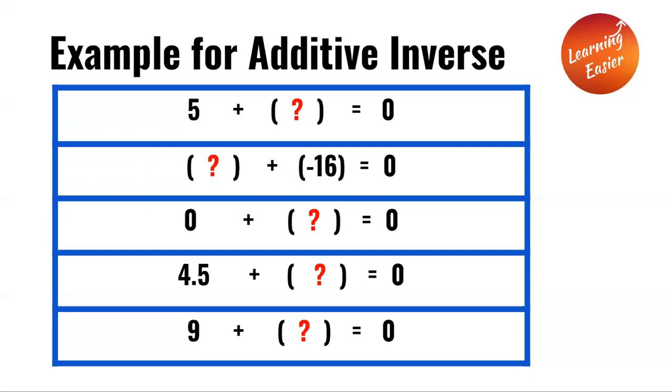Zero plus a number equals zero. The answer would be zero, as the additive inverse of zero is zero itself.